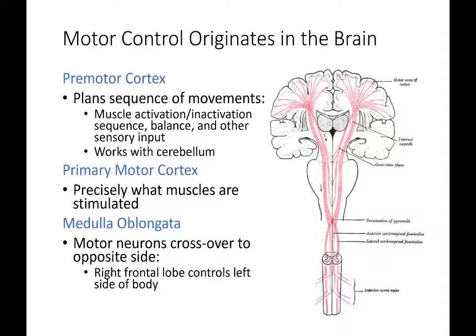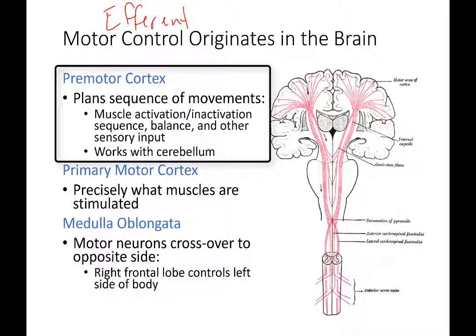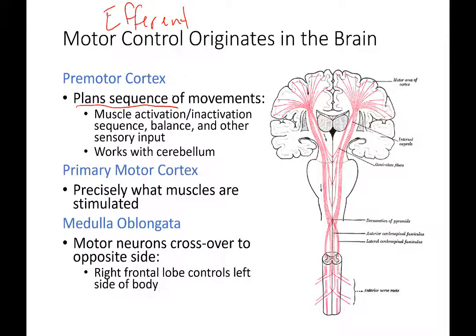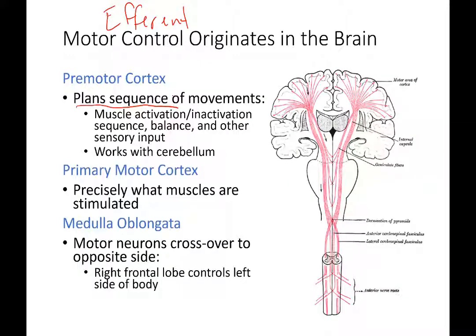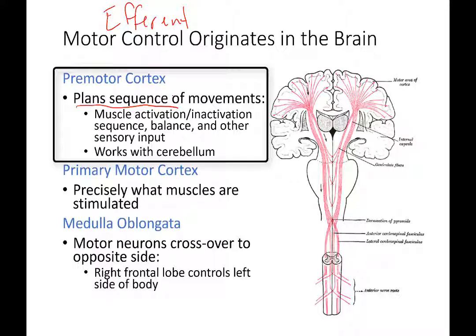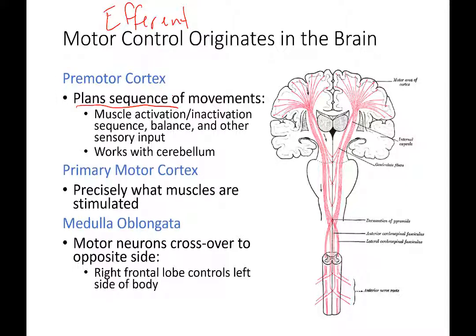For motor control, efferent information originates in the premotor cortex, which plans out the muscles needed and the appropriate sequence. For example, throwing a ball requires gripping it, lifting the arm, bringing it back, arching, and then propelling the arm forward to release the ball — a complex series of movements activating a very specific muscle sequence. The premotor cortex is the place where we plan a sequence of movements and decide which muscles need to be activated in a specific pattern.